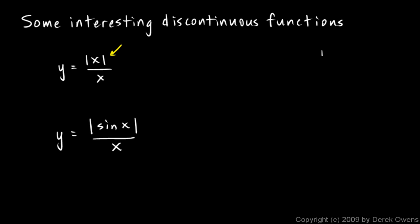This absolute value here changes things when x is negative. When x is positive, the absolute value of x is the same thing as x. So when x is positive, this is just x over x, or 1. And we do have exactly what we saw when x is positive. It just goes out to the right at a y value of 1.